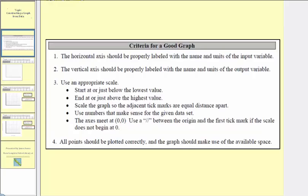Number one, the horizontal axis should be properly labeled with the name and units of the input variable. Two, the vertical axis should be properly labeled with the name and units of the output variable. So it's important to remember that the input variable goes along the horizontal axis and the output variable goes along the vertical axis.